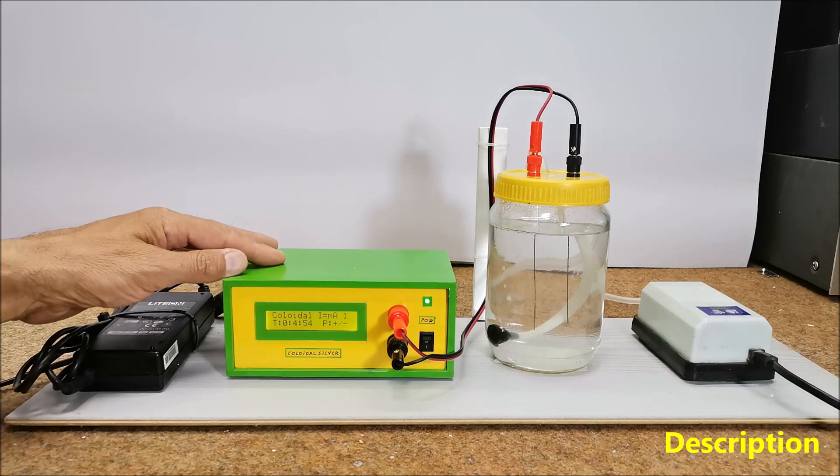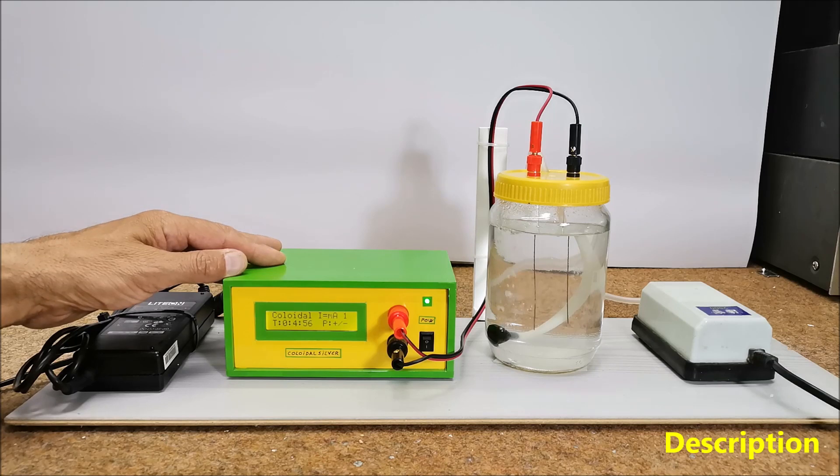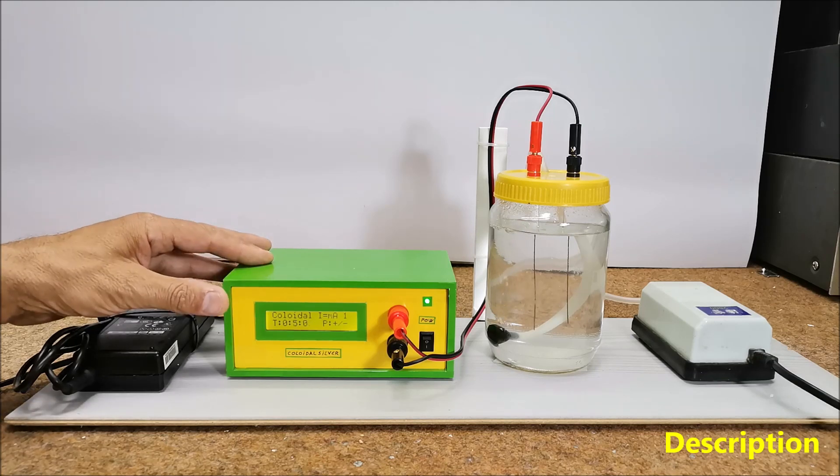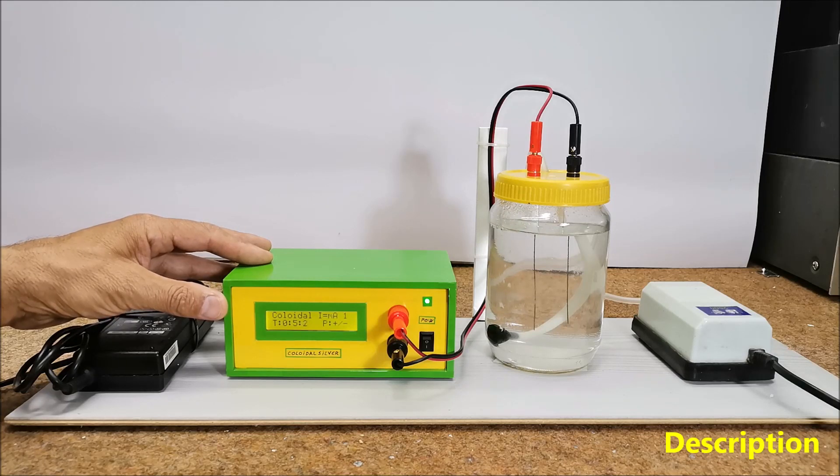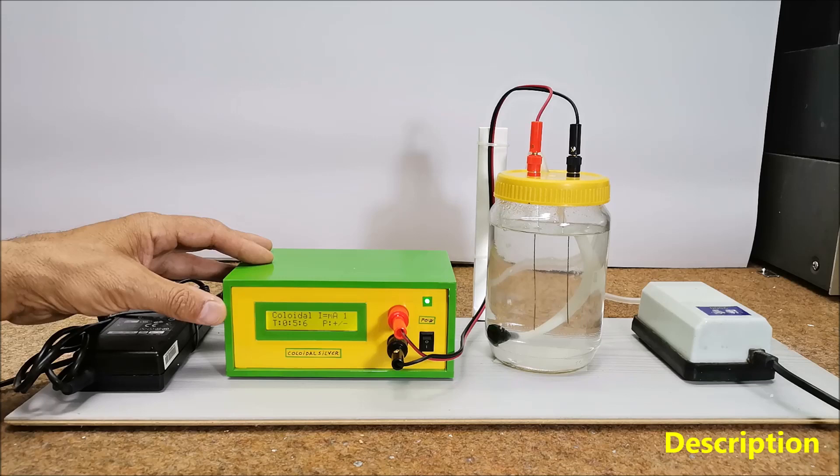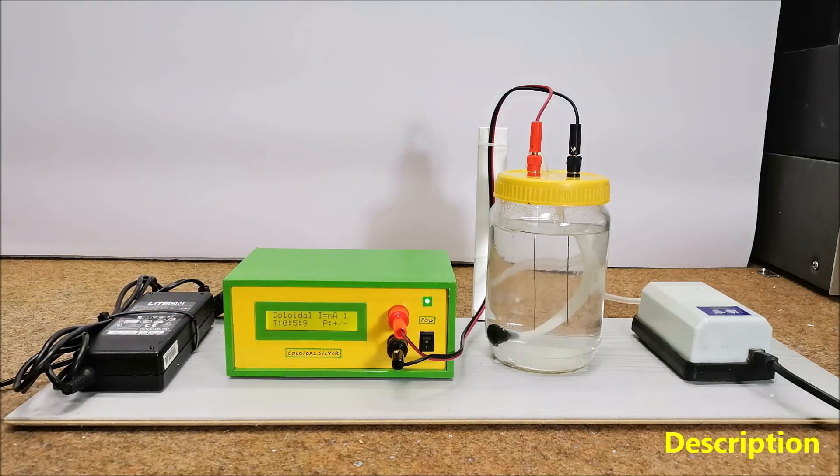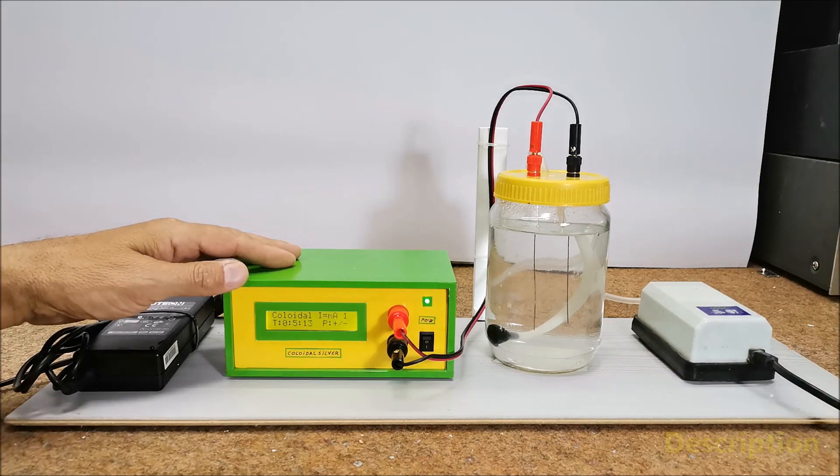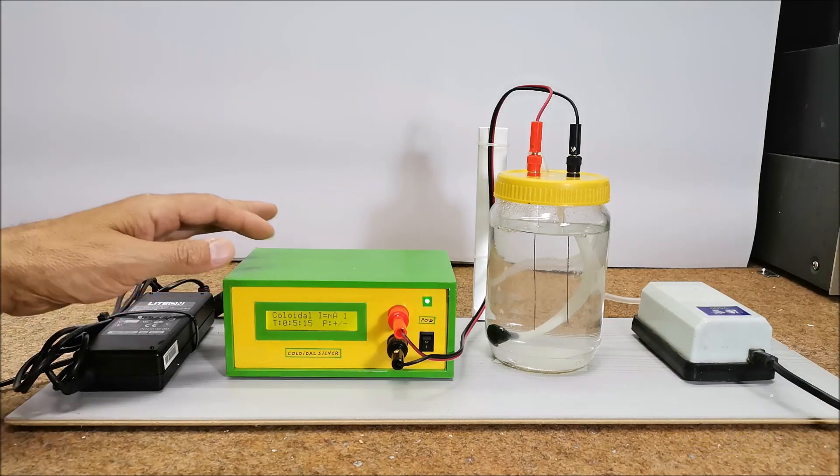The device has a PWM based variable current limiter, automatic polarity reversal of electrodes, as well as a timer that turns off the device when the desired ppm concentration of the solution is reached. Unlike the previous device mentioned earlier, to make this device you need some knowledge of electronics and microcontrollers.